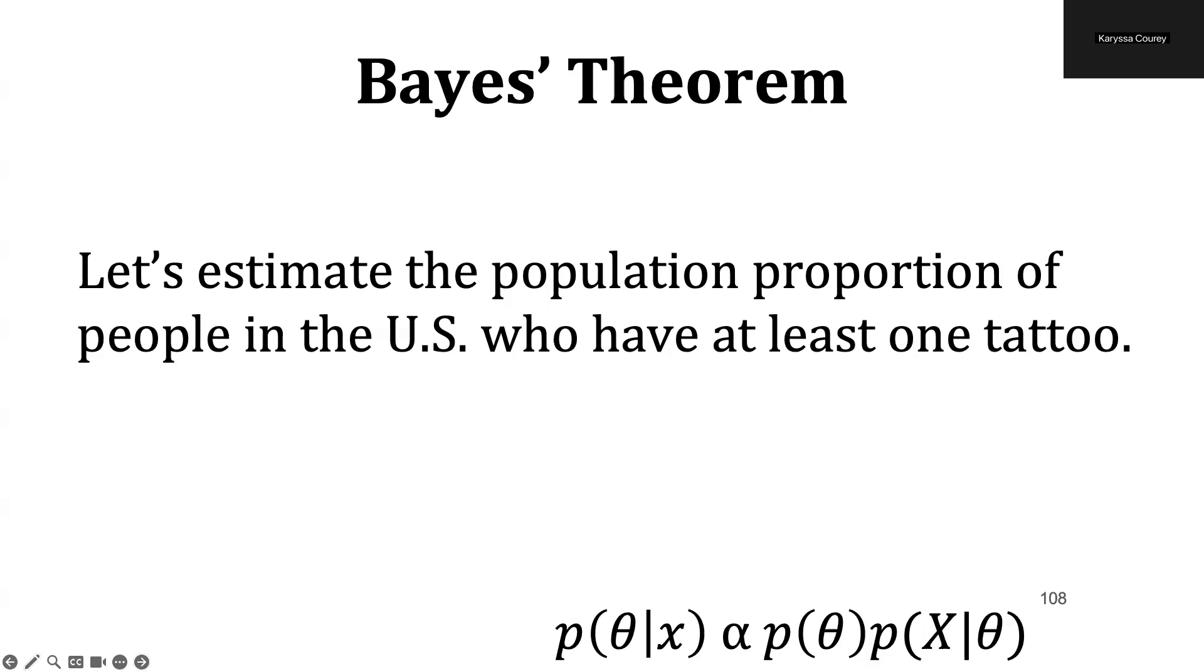Hello, my name is Carissa Corey, and today I'll be going through an example applying Bayes' theorem when working with probability distributions. Specifically, we'll do an example using the beta-binomial model, and we're going to estimate the population proportion of people in the United States who have at least one tattoo.